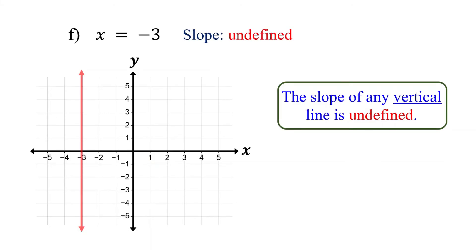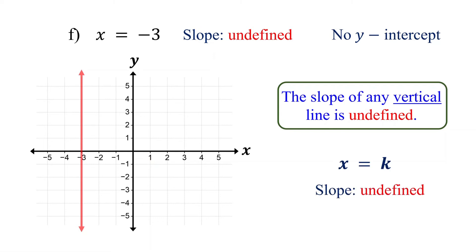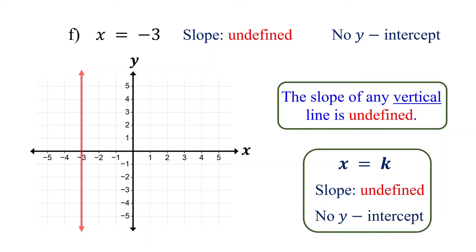So the slope here is undefined. Since the line doesn't cross the y-axis, it has no y-intercept. In general, if an equation is in the form x = k, where k is a constant, then the slope is undefined and there is no y-intercept. For more on the slope of vertical and horizontal lines using rise and run, check the link in the description.